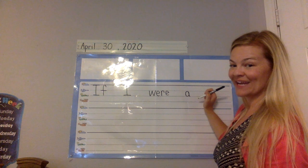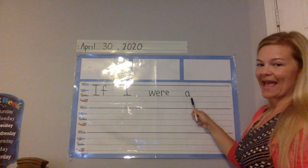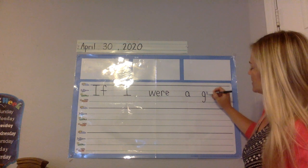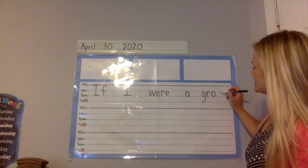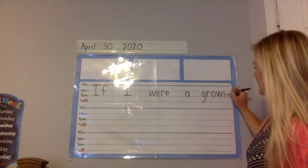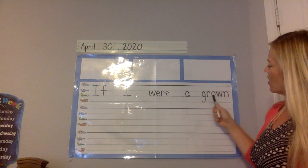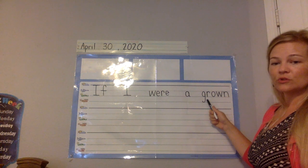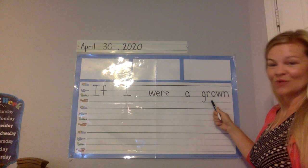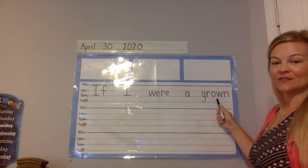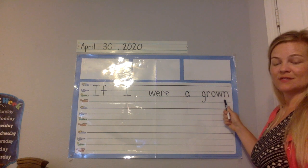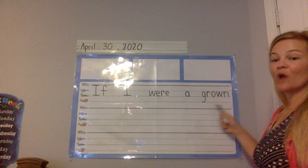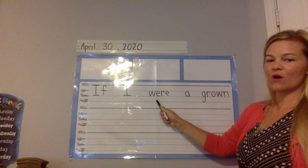Next, add a space and write a lowercase a. Then the next word: lowercase g, lowercase r, lowercase o, lowercase w, lowercase n. G makes a "guh" sound, R makes an "ur" sound, O makes an "o" sound, W makes a "wah" sound, and N makes an "nn" sound. Sounding it out: "grown." So our sentence so far is: If I were a grown.